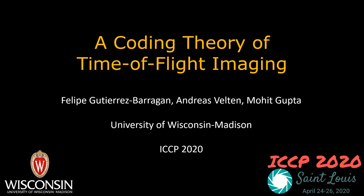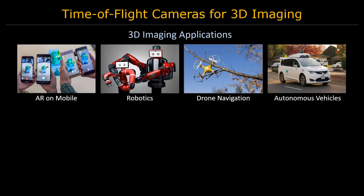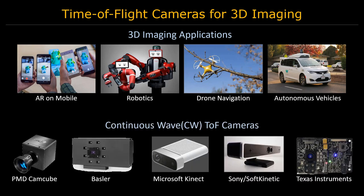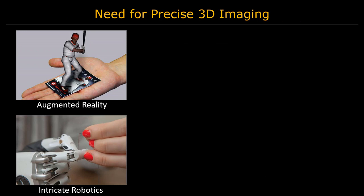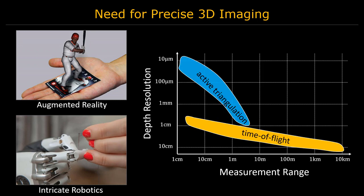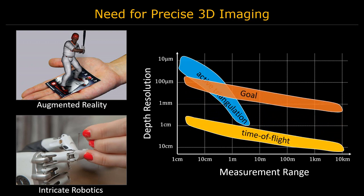A coding theory of time-of-flight imaging. Time-of-flight imaging systems are used in various depth sensing applications. Continuous wave time-of-flight cameras are particularly attractive due to their low power and low cost requirements. Some of these 3D applications require high depth precision for a wide range of depths. However, current 3D cameras do not have the depth precision or range required for these applications. Our goal is to increase the depth resolution of time-of-flight cameras without decreasing their depth range.